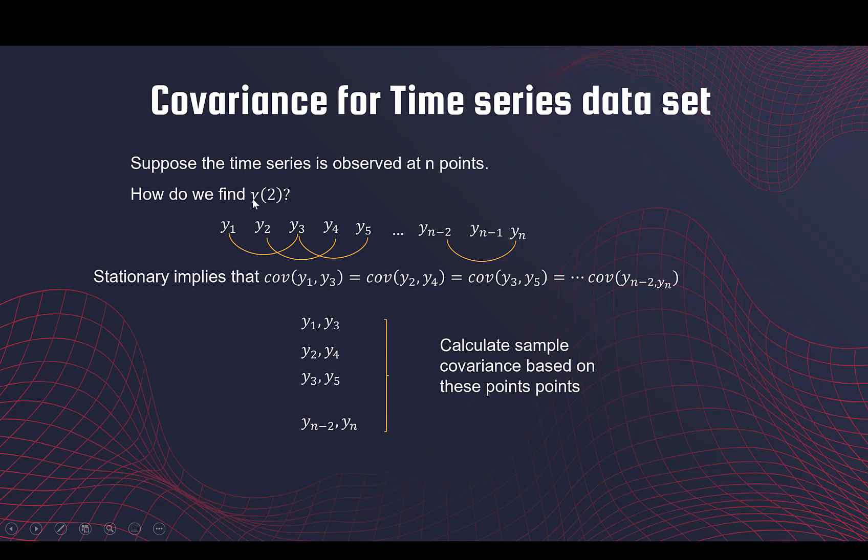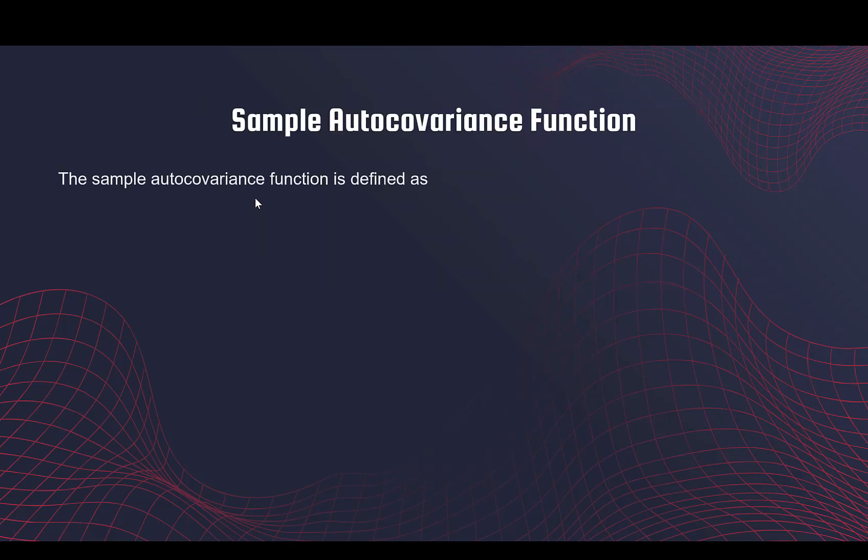The sample autocovariance function is defined in this way. For a general lag h—in the previous slide we had lag 2, but we have to give a definition—this is a general lag h. This hat denotes the estimate.